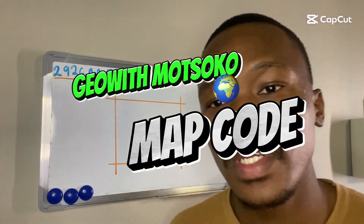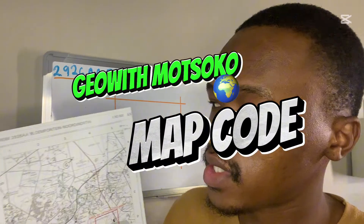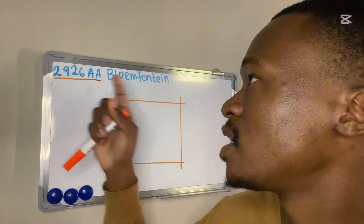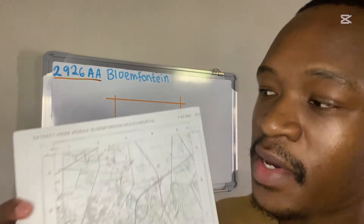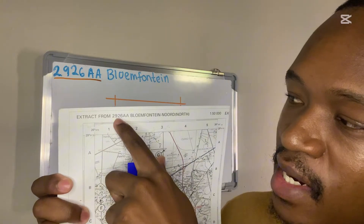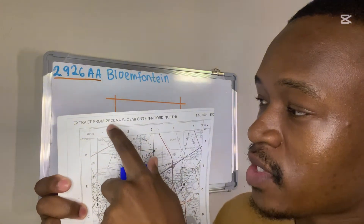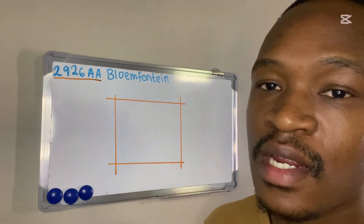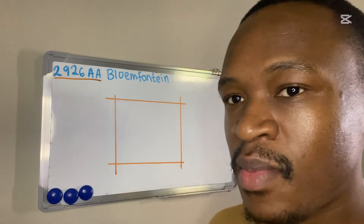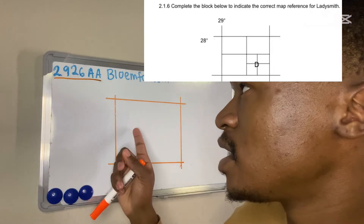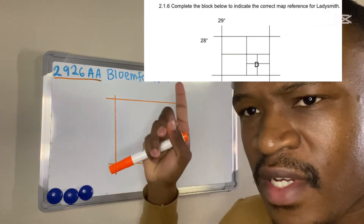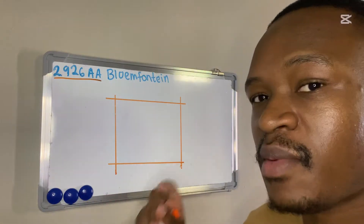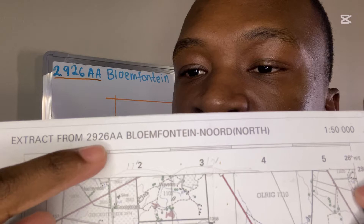Welcome to this video. Today I'm going to show you how to use the map code. You can see the map code 2926AA — Plumefontaine. Every map has a name, and that name contains a map code. For this map, Plumefontaine, it says 2926AA. In last time's paper there was a question which said 'complete the block to indicate the map reference,' so I'm going to show you how to use this code to obtain 2926AA.